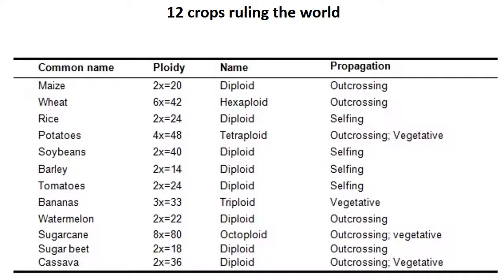Wheat is a hexaploid crop — 6x = 42 — and is out-crossing. Rice is diploid with 2n = 24 chromosome number and is self-pollinated. Wheat is self-pollinated only — here it is mentioned incorrectly. Potato is tetraploid, 4x = 48.